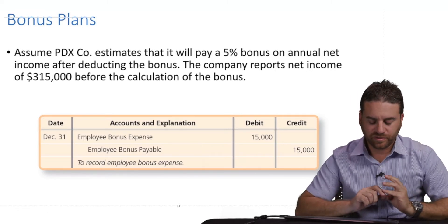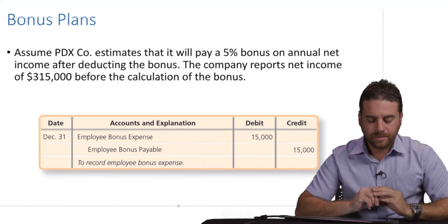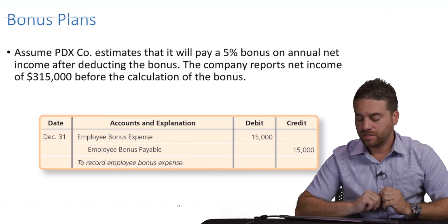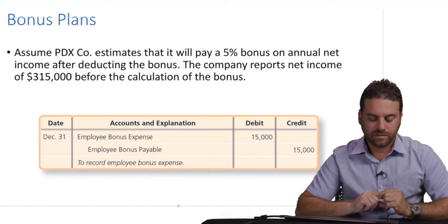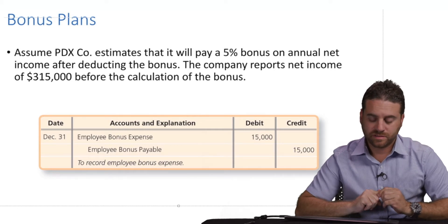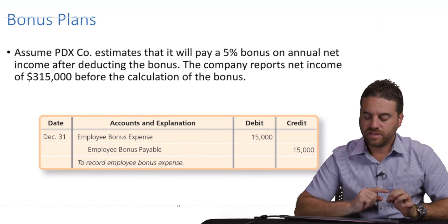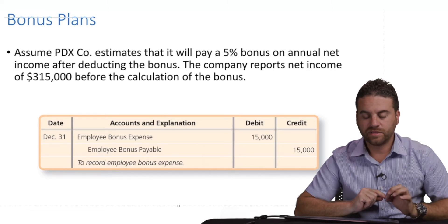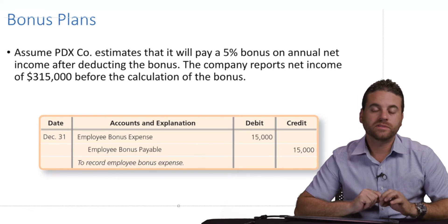Here's an example in front of us. Let's assume that PDX company estimates that it will pay a 5% bonus on annual net income after deducting the bonus — 5% bonus on the annual net income after deducting the bonus.